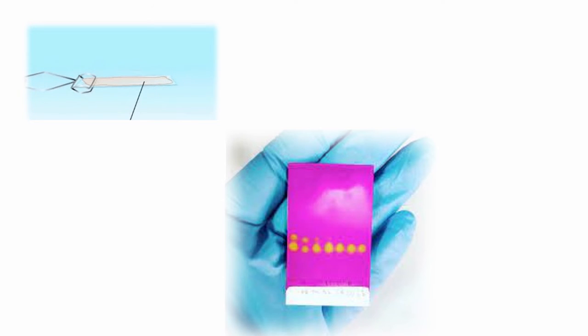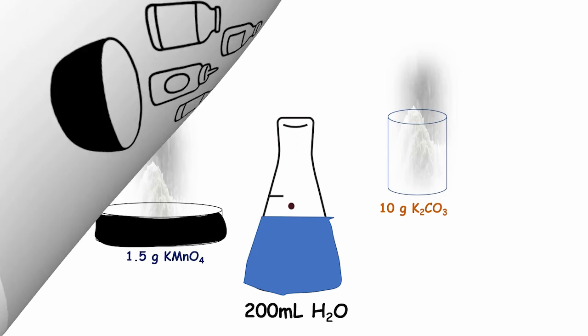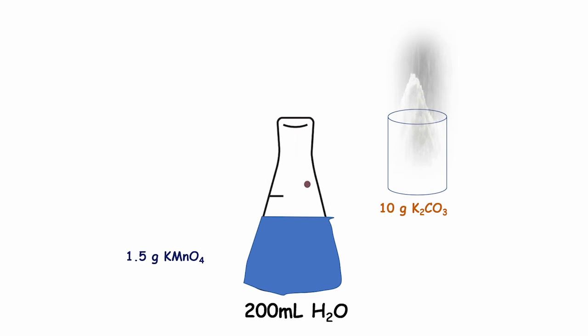However, it will be necessary to gently heat the TLC plate to visualize the spot. Recipe to make this potassium permanganate stain. Dissolve 1.5 gram of KMnO4, 10 gram of K2CO3 and 1.25 ml of 10% sodium hydroxide in 200 ml water. A typical lifetime for this stain is approximately three months.